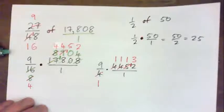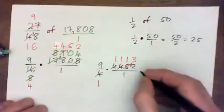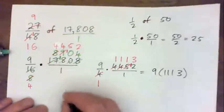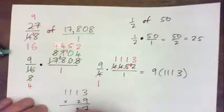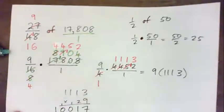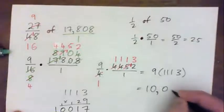So 9 times that number over 1 times 1 is just 9 times 1,113. Right? So that's 27. Carry the 2. Well, 9 is 9, is 11. Carry the 1. 10. Carry the 1. And 10. Right? So we get 10,017.